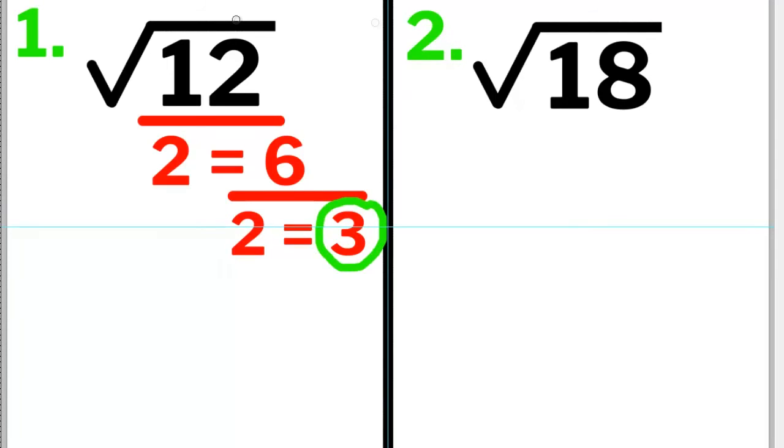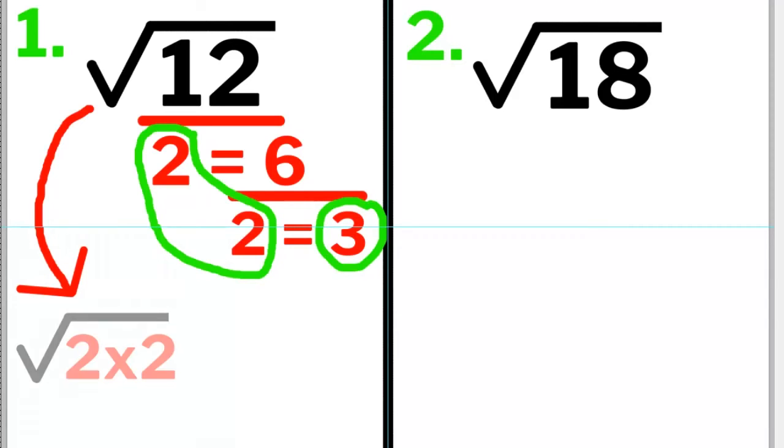Now the 3, I cannot divide that number by anything except for 1 or 3, so I'll stop here. We have two 2's and one 3. Thus, we can rewrite the square root of 12 as the square root of 2 times 2 times the square root of 3.